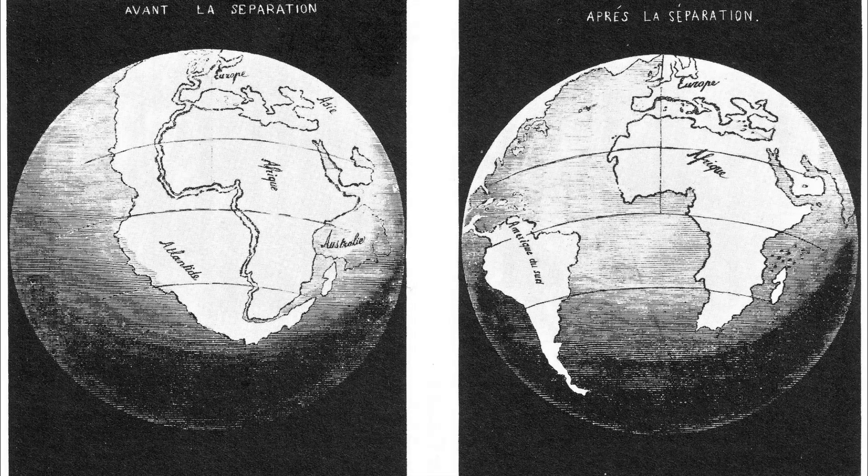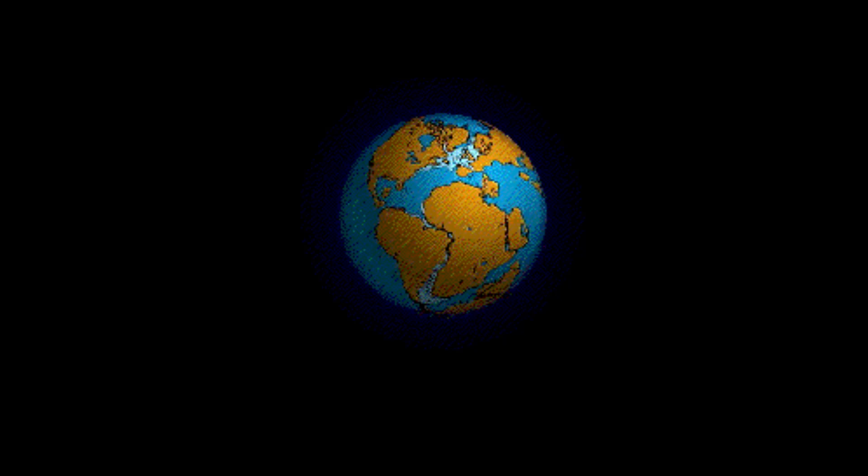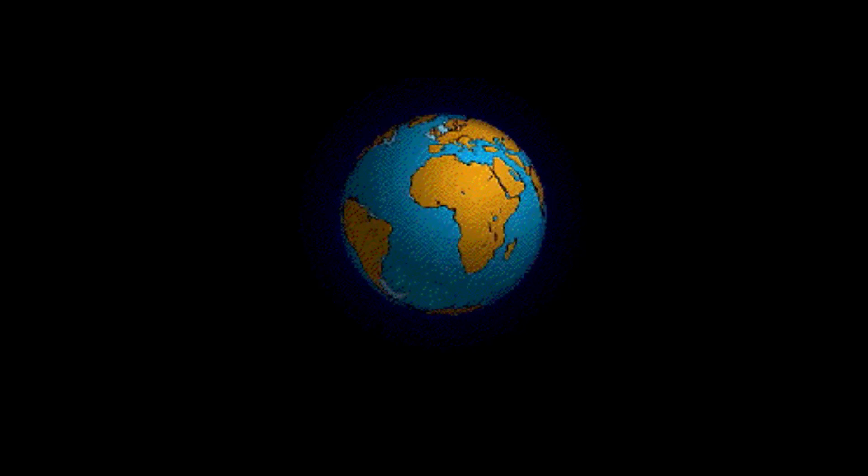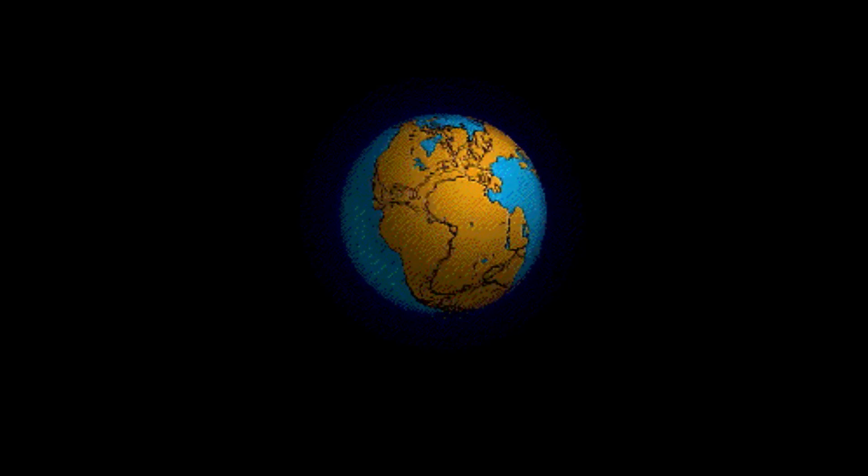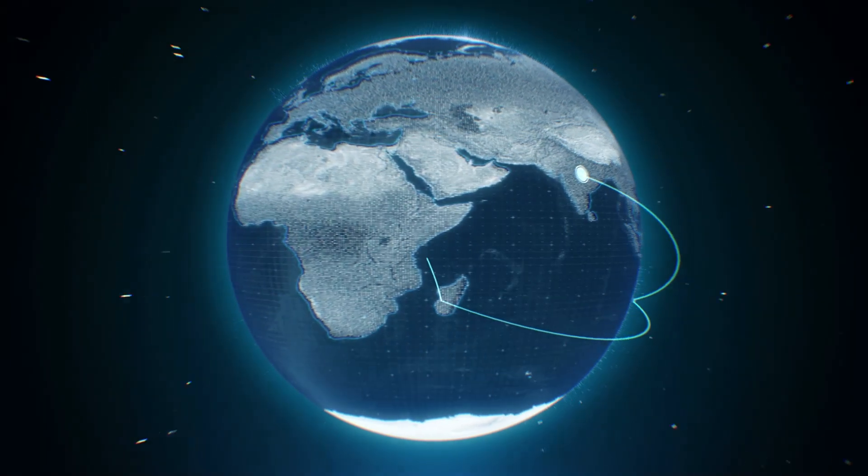The redistribution of mass and gravity subtly nudges continents, alters sea levels, and reshapes the planet's form. These adjustments reverberate throughout Earth's systems, influencing weather patterns, ocean currents, and even the stability of ecosystems.